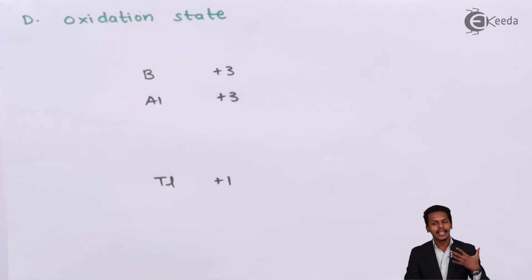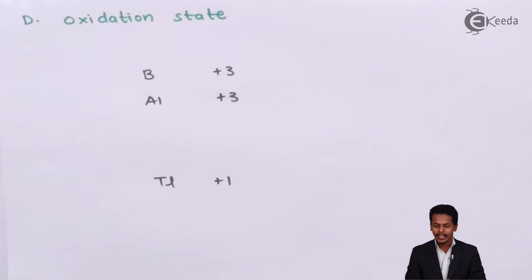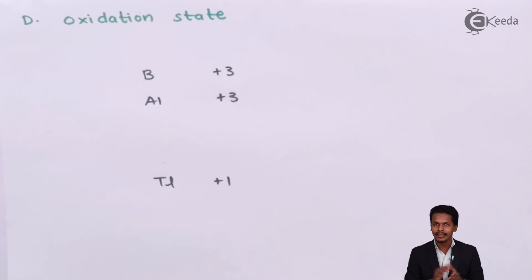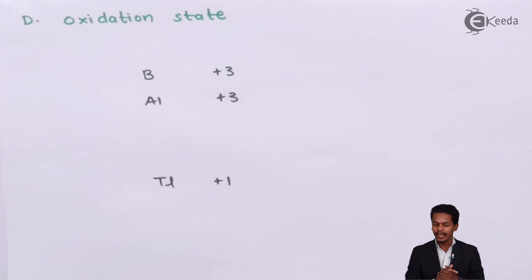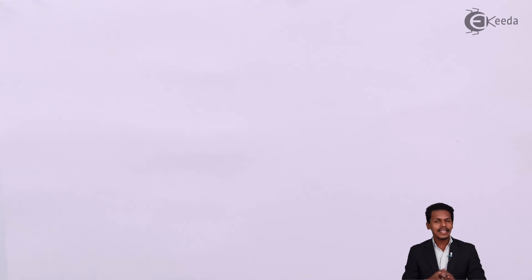Gallium and Indium show both +3 and +1 oxidation states. Now let us discuss further why Boron exhibits a stable +3 oxidation state and Thallium exhibits a stable +1 oxidation state.